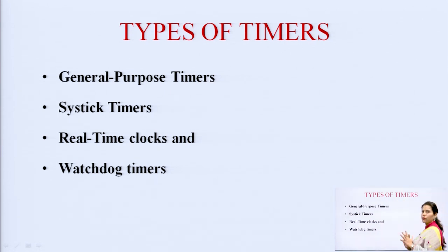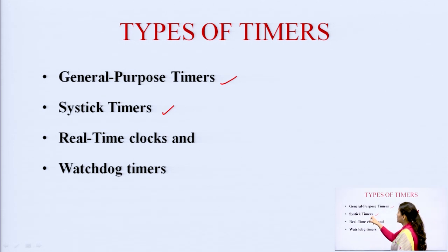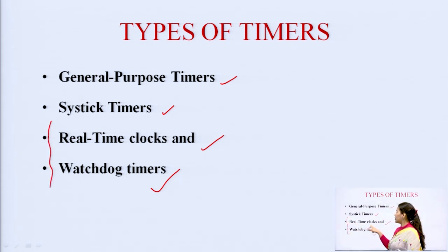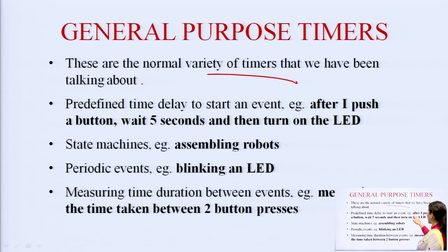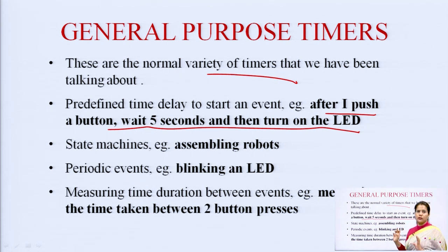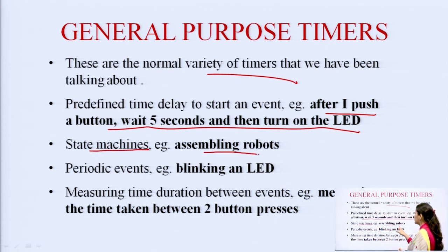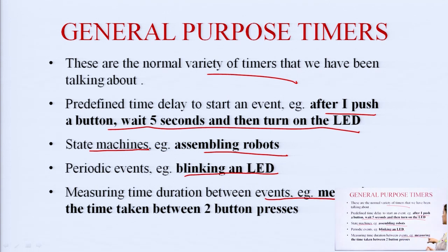In embedded system applications, we come across different types of timers. As a conclusion, four types are used: general purpose timers, SysTick timers, real time clocks, and watchdog timers. General purpose timers are the normal variety — for example, after one push of a button, waiting 5 seconds and then turning on an LED, implementing state machines, blinking LEDs, or measuring time duration between events.